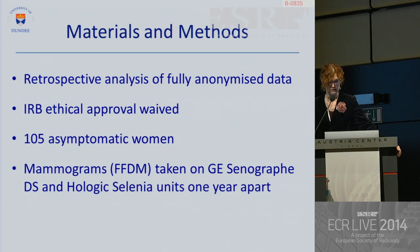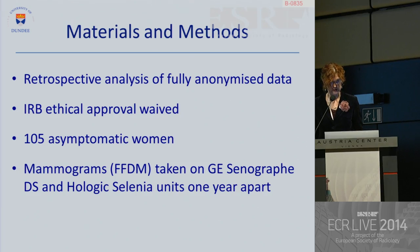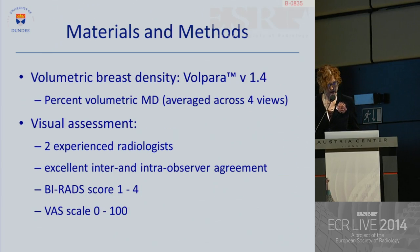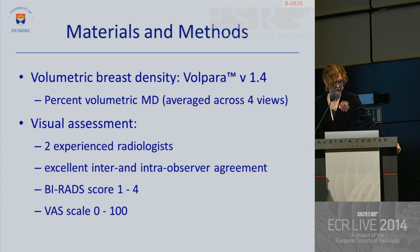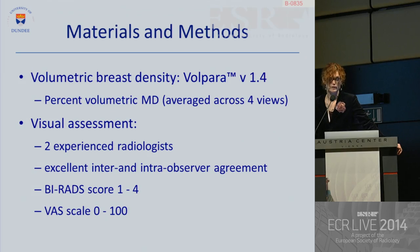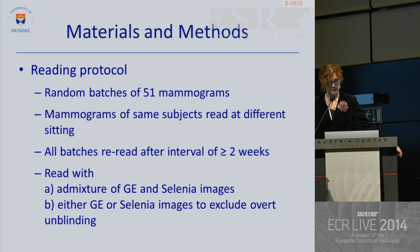This was a retrospective analysis of fully anonymized data, and IRB ethical approval was waived. We had 105 asymptomatic women, all of whom had FFDM taken on GE Senograph DS and Hologic Selenia mammograms one year apart. Volumetric density was assessed with Volpara version 1.4, and the metric used was percent volumetric density averaged across four views. Visual assessment was by two very experienced radiologists with proven excellent inter- and intra-observer agreement, and density was categorized according to the BIRAD score and a VAS scale. The reading protocol was quite complicated — we had random batches of 51 mammograms, and mammograms of the same subject were not read in the same setting.